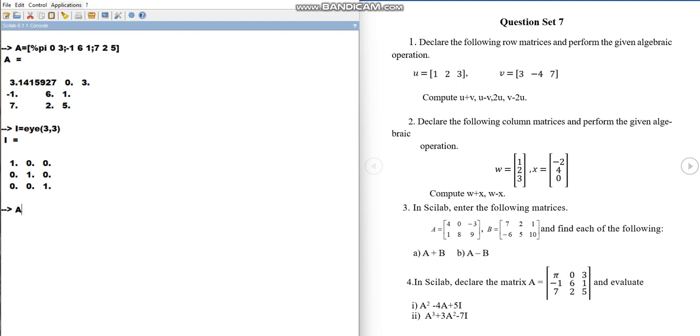Now you can do A square means A cap 2 minus 4 star A plus 5 star I. So I, we have already declared as the identity matrix. Just see the answer. This is the answer.